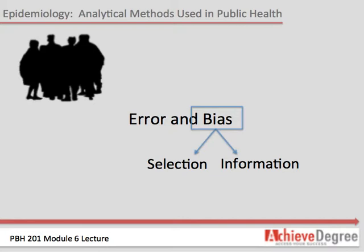There can still be a problem even if selection and retention bias is minimized — information bias can still creep in. People in one group may be more accurate in remembering exposure to a risk factor. For example, women who had children with birth defects may be more likely to remember drinking alcohol during pregnancy than women who gave birth to healthy children. This is recall bias. To minimize recall bias, epidemiologists use methods such as memory cards and calendars. Interviewer bias is another kind of information bias. When an interviewer knows the woman he is interviewing has given birth to a child with a birth defect, this knowledge may bias the way he records the level of the pregnant woman's drinking. Epidemiologists can keep interviewers ignorant of the hypothesis being studied to minimize this type of bias.